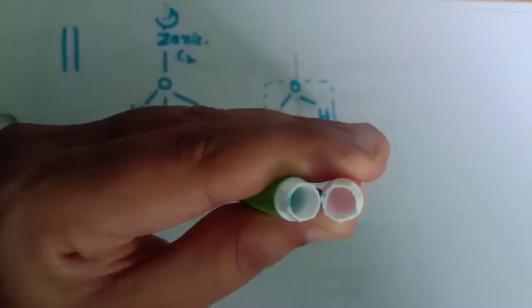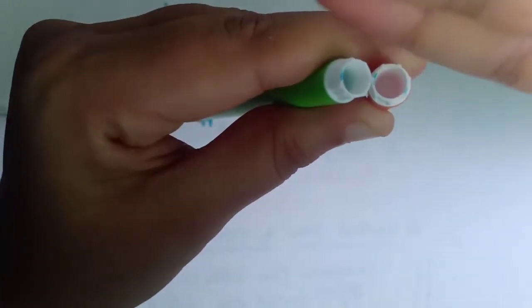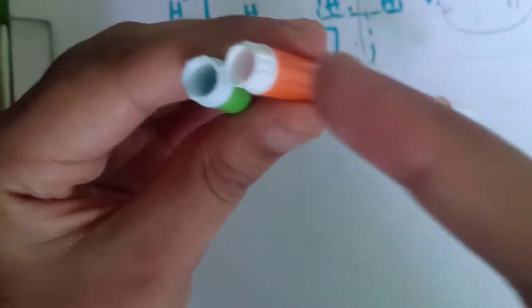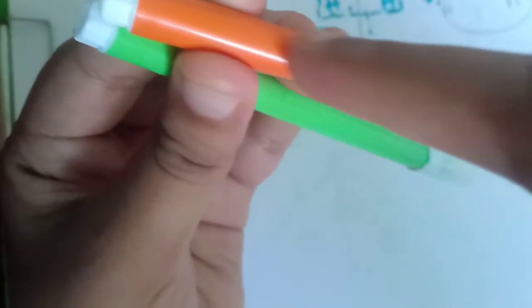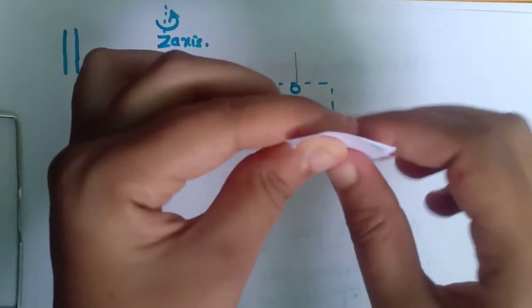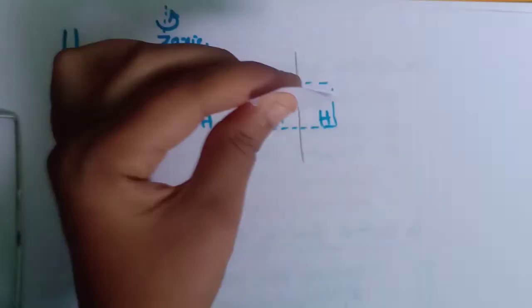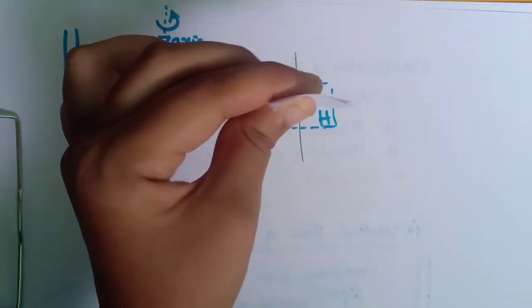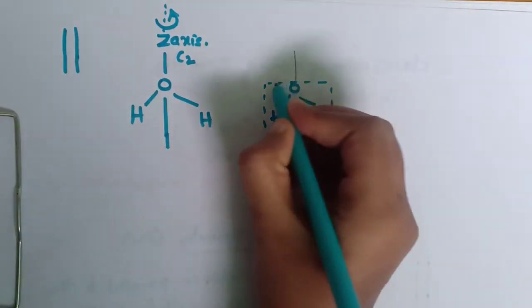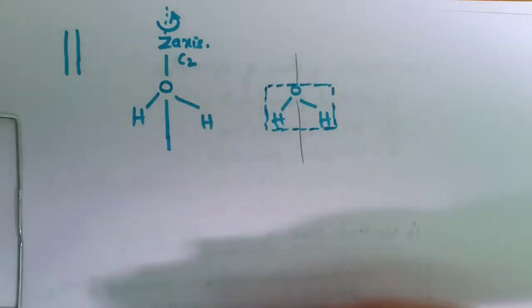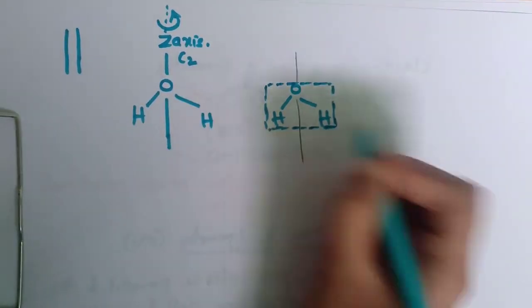The vertical plane of symmetry is parallel to the Z axis. If you pass an imaginary plane parallel to the Z axis through the H2O molecule, it cuts the molecule such that one half comes to the front side and the other goes to the back side, and these two halves are mirror images of each other. This is one vertical plane of symmetry in the H2O molecule.